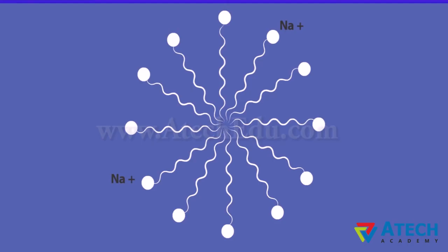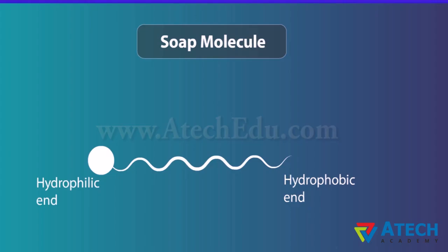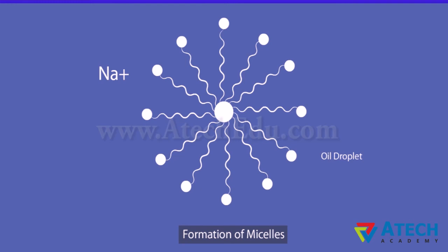Soaps or detergents consist of two parts with distinct properties. One part or end consists of a large hydrocarbon tail which is hydrophobic or water repelling. The other part is hydrophilic or water loving. The molecules of soap are sodium or potassium salts of long chain carboxylic acids. The ionic end which is water loving in nature dissolves in water while the carbon chain dissolves in oil. The soap molecules form structures called micelles where one end of the molecules is towards the oil droplet while the ionic end faces outside.